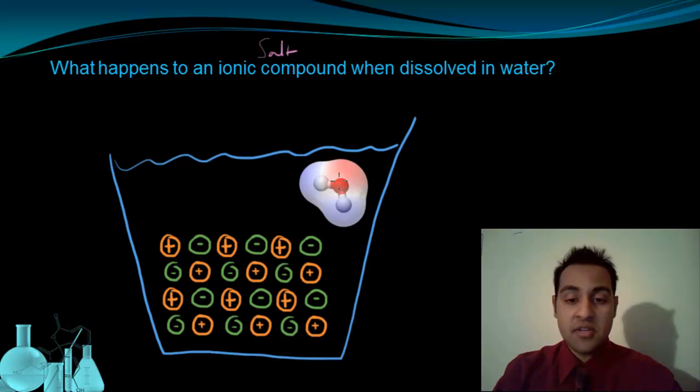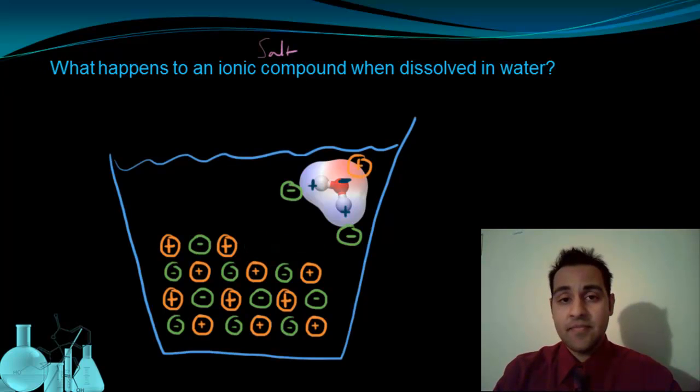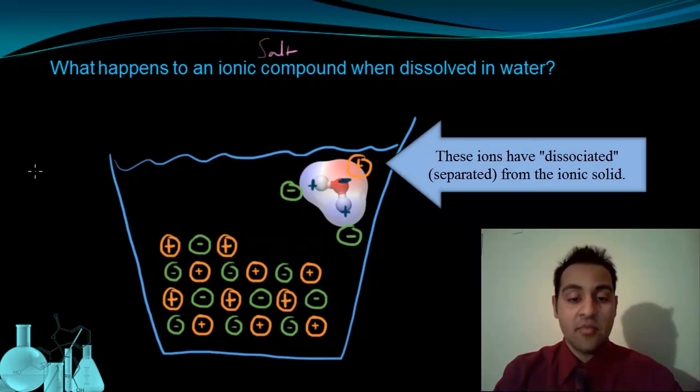We know that the oxygen is going to be mostly negative, and we have some partial positive charges on the hydrogens. So each hydrogen of the water molecule is going to attract a negative ion from the salt, and the oxygen of a water molecule is going to be able to attract the positive ion of the ionic solid. So slowly, the ions that are at the surface of the solid get broken up and dissociate, or separate, from the rest of the ionic solid.